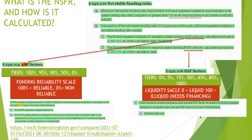We also have RSF factors, which are basically a liquidity scale: zero equals fully liquid, 100 means it is illiquid and needs financing. An RSF factor of zero percent applies to unencumbered assets. Zero percent will also apply to currency and coin, meaning zero percent will need 100% financing.